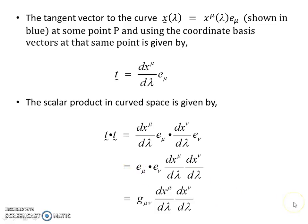The scalar product, just as in flat space, will be t·t = (dx^μ/dλ)e_μ dotted with itself. This inner product gives us the coefficients of the metric. And here we go - we get the g_μν (dx^μ/dλ)(dx^ν/dλ) term.